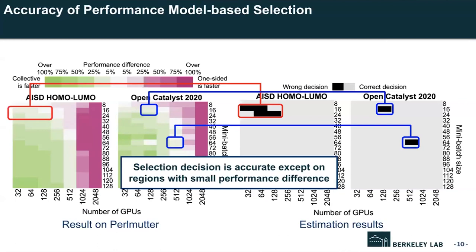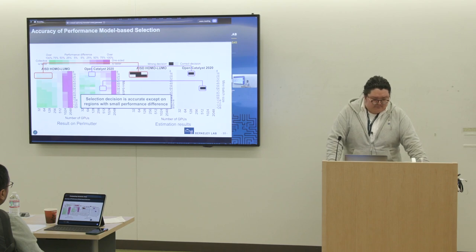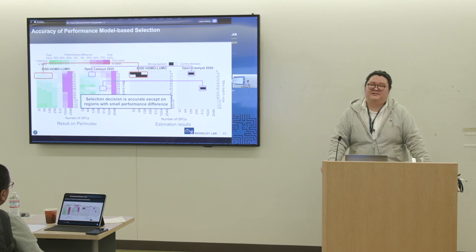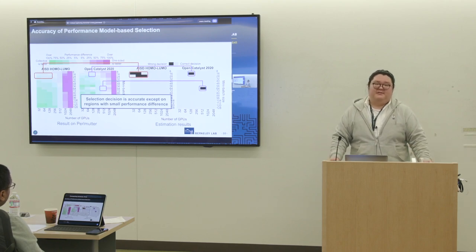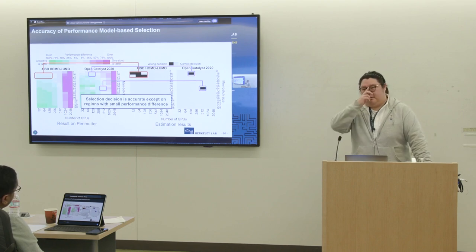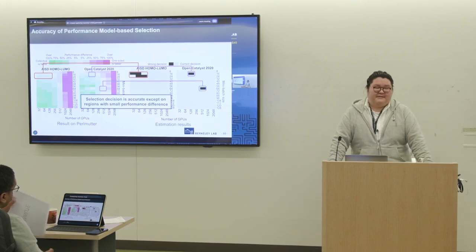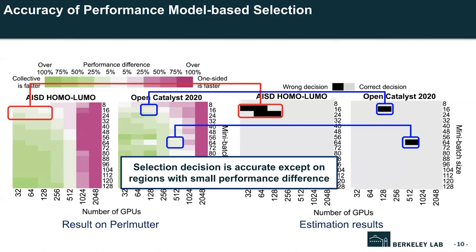This figure illustrates the communication method selection accuracy based on the performance model. The left heat map is the actual performance comparison shown earlier; the right heat map shows the estimation by the performance model. Black boxes indicate where the performance model made a wrong decision. The performance model achieves 96% correctness on average on Frontier and Summit. Wrong selections occur only in cases where the performance difference between the two methods is less than 10%.